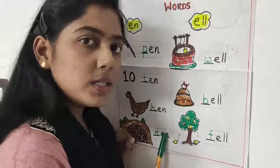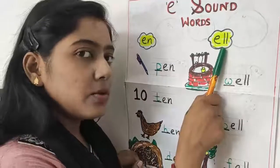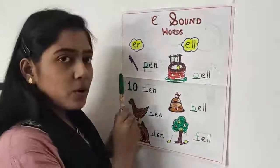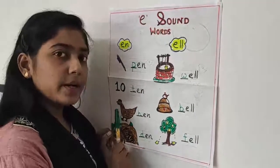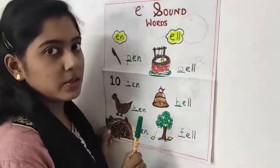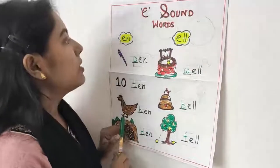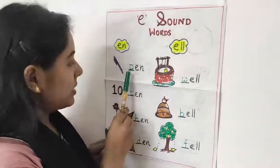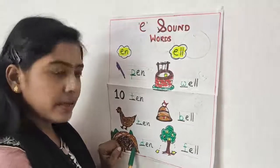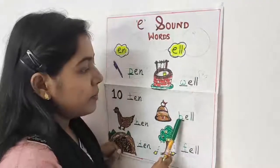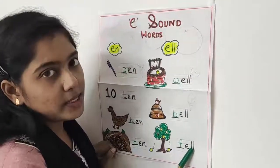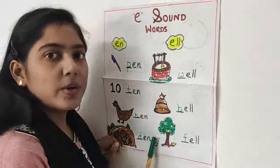Today we have learned a few E sound words with N sound and L sound. Parents, please help your children. Now let us read those words. Everyone say: P for pen, T-E-N ten, H-E-N hen, D-E-N den, W-E-double-L well, B-E-double-L bell, F-E-double-L fell. Do practice at home these words. And in your copy, write these words.